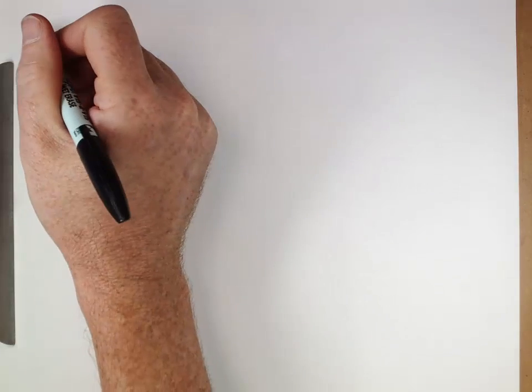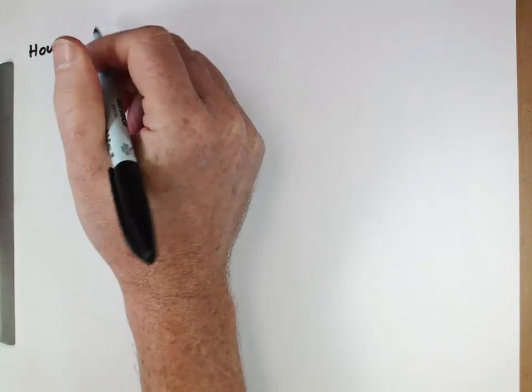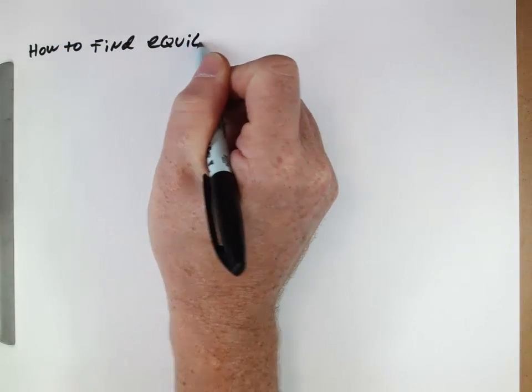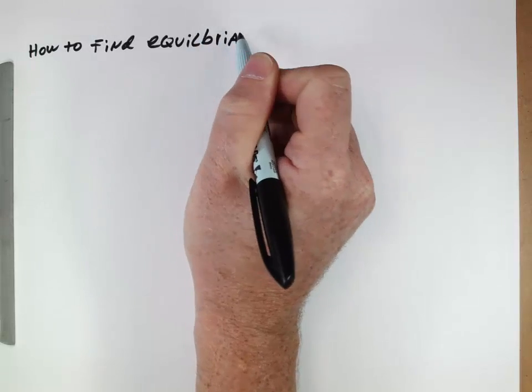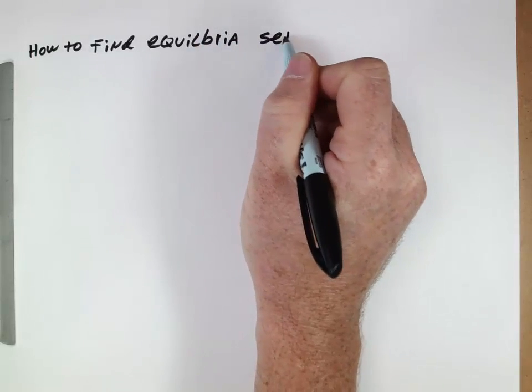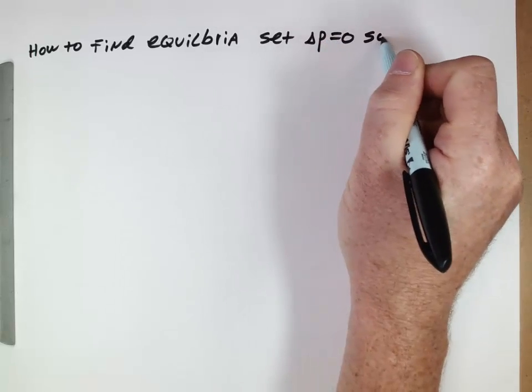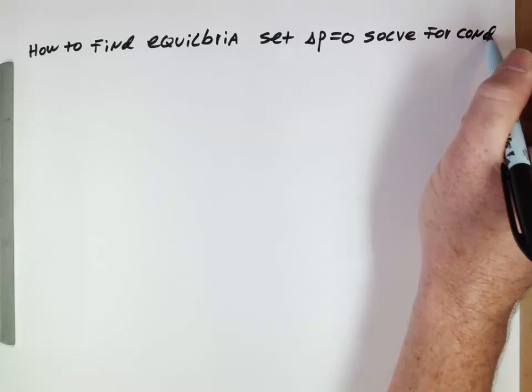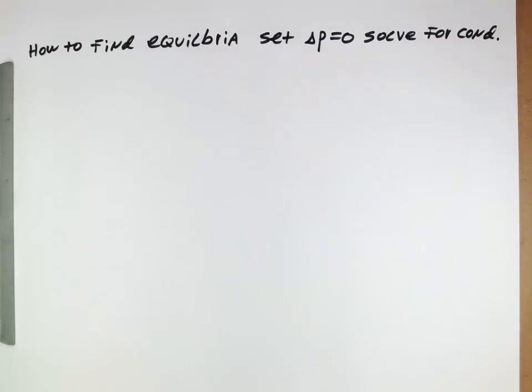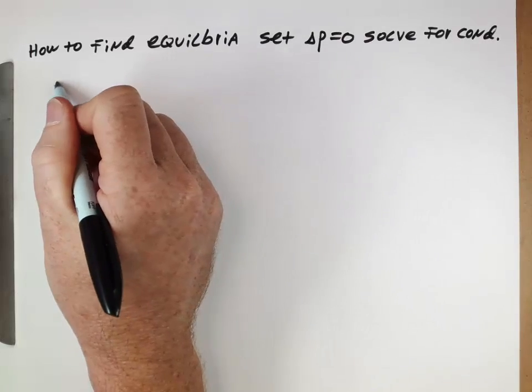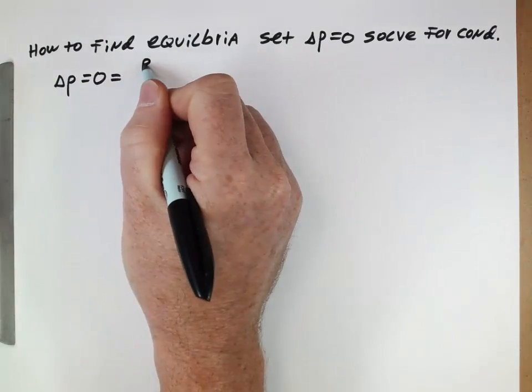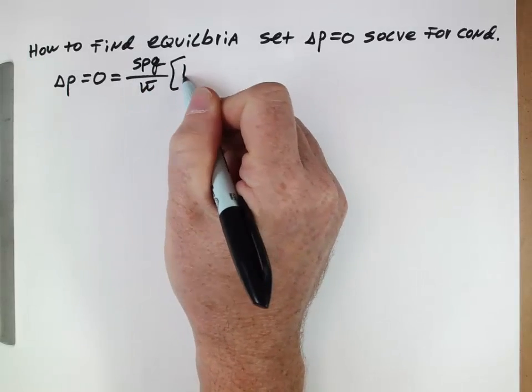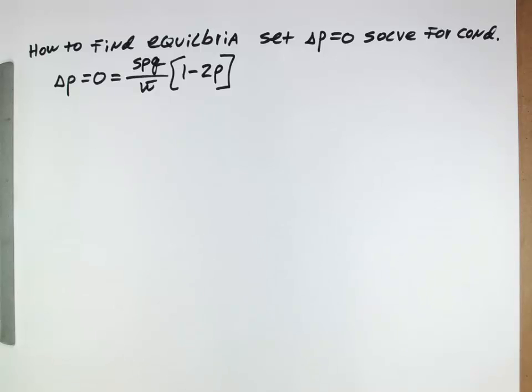We can think about how to solve for these equilibria, or how to find equilibria such as the one we just looked at. What we can do is we can set delta P equal to 0 and solve for the conditions. This is thinking about what we just did, but with an actual approach. So delta P equals 0. And remember from before, we had SPQ over W bar times 1 minus 2P, the equation we derived for the overdominance case.